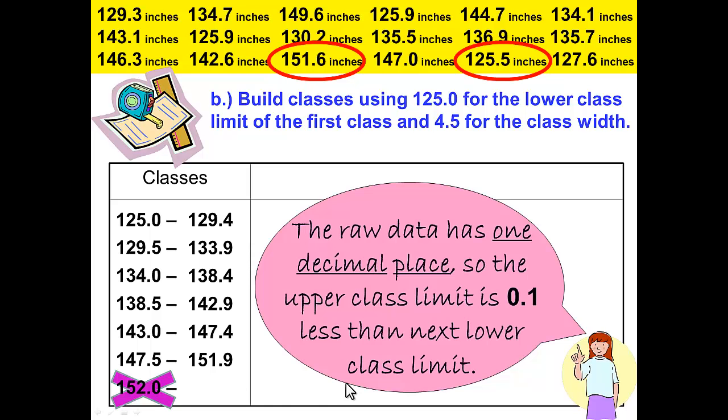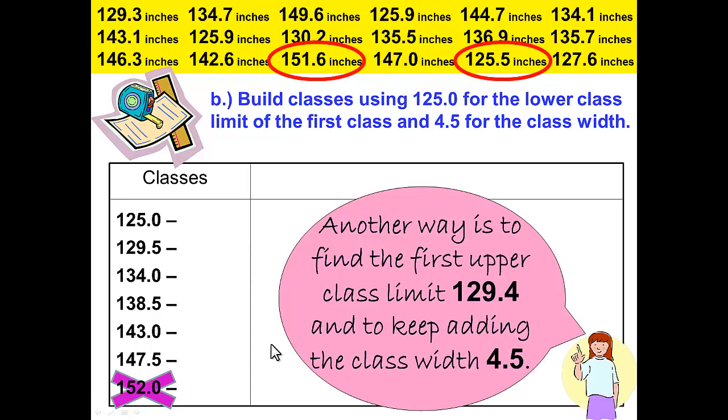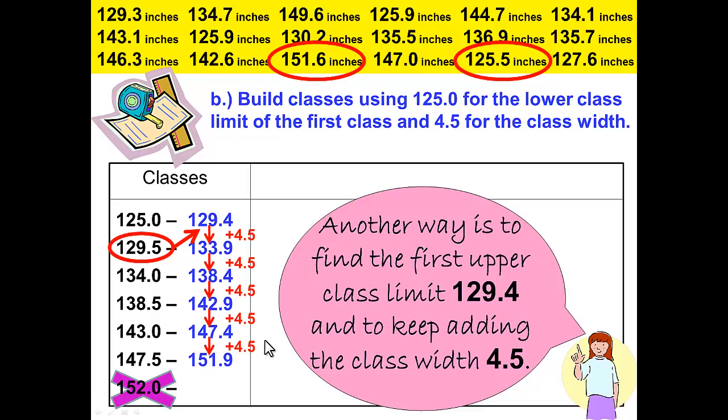Another way to do this is to find the first upper class limit the same way as we did before of 129.4, but instead of subtracting a tenth, go back and use the class width of 4.5 and add 4.5 to each previous upper class limit to create those upper class limits all the way down. Either way that we do that is fine. We still end up with the same answers and we have our classes.